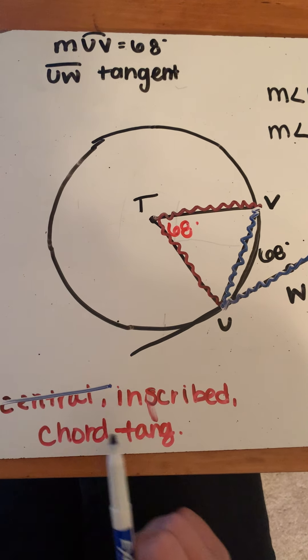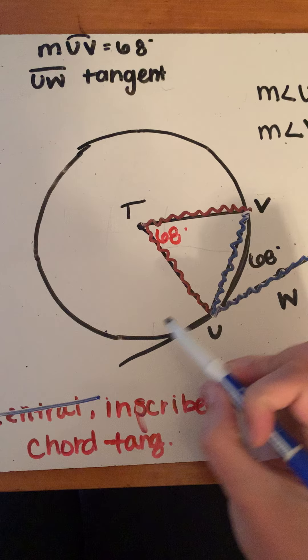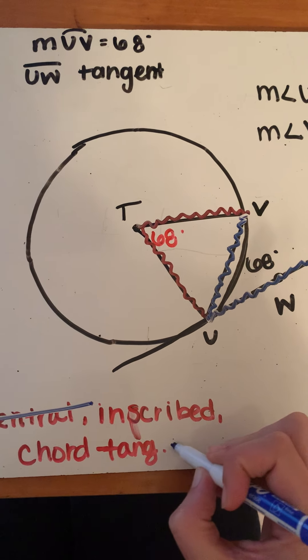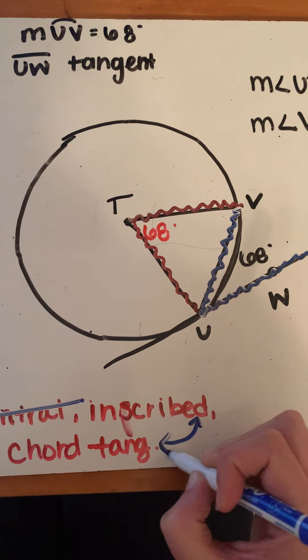I'm going to say this one is chord and tangent, because it's made up of a chord UV and a tangent line UW. Now the rule for chord tangent angles is the exact same as inscribed angles.